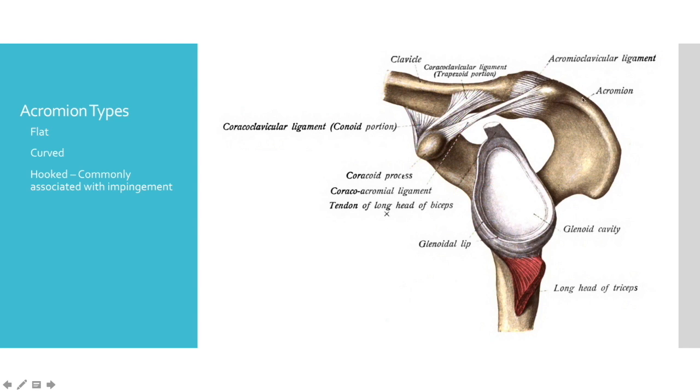And in some individuals, the acromion is bigger than in others. Some individuals have a flat acromion, some people have a curved acromion, and then some people have what's called a hooked acromion. The hooked acromion is just a little bit bigger and it kind of goes downward into subacromial space. Now, this is important because our medical literature shows that the hooked acromion is more associated with subacromial impingement syndrome. It's also more associated with rotator cuff damage over time.